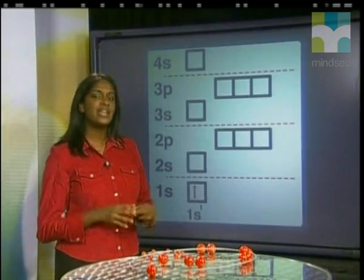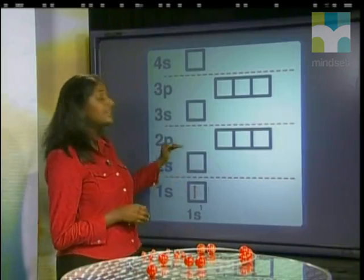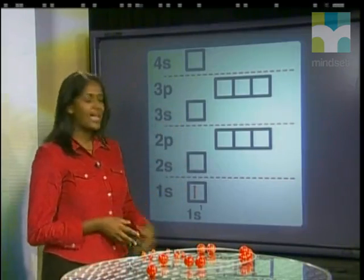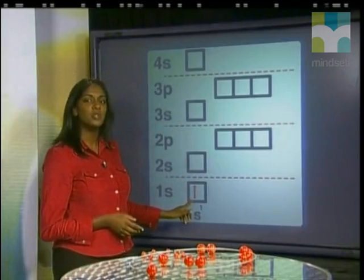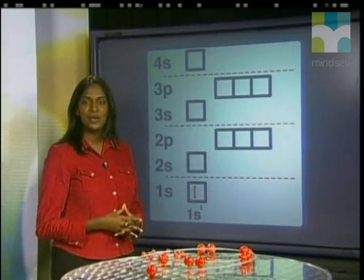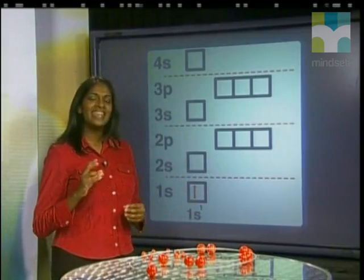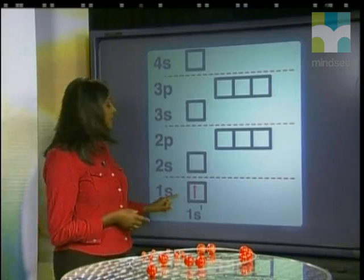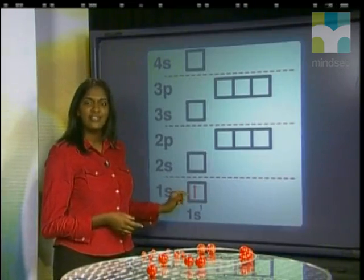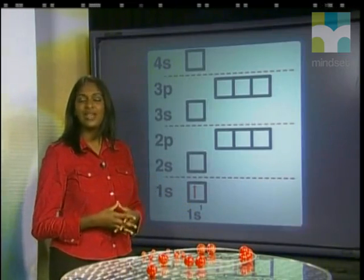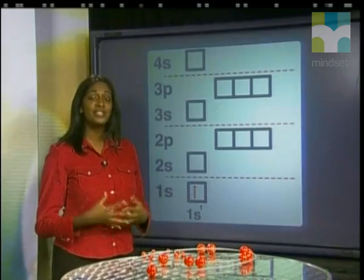The electrons are arranged in different energy levels. We represent electrons as arrows drawn in squares that represent a single orbital. When an electron is close to the nucleus, it occupies the first energy level. The first energy level corresponds to Bohr's first orbit.